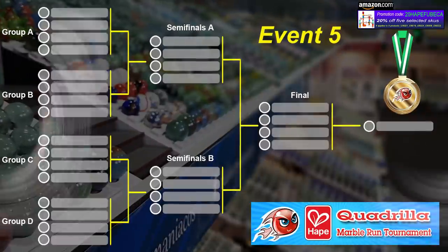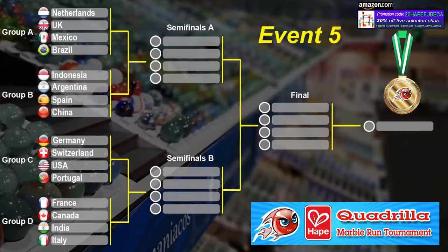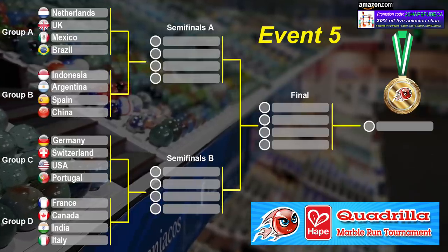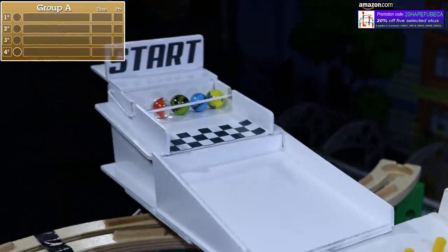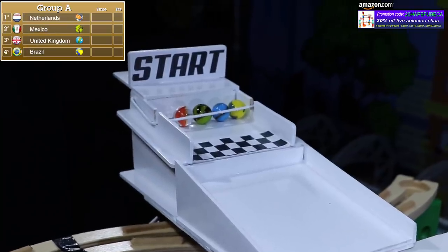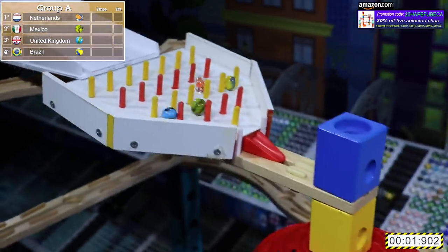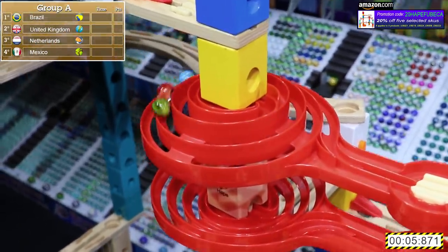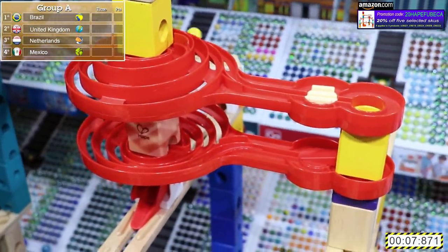This is event number 5, Marble Soccer. As you have a look at our bracket here on the left side, your groupings A, B, C, and D as they have been throughout this entire tournament. We'll begin with group A. It's the Netherlands, Mexico, the UK, and Brazil. Brazil are defending winners. They won an event before, and they are in this potentially as a championship contender.